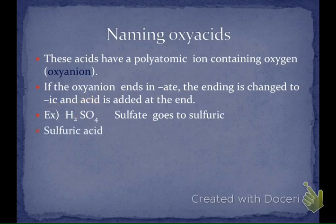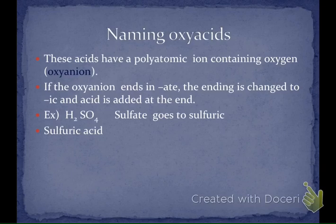As soon as you hear the word 'acid' in a name, you'll know if it's binary or an oxy acid. If we say hydrobromic acid or hydrochloric acid, you know it's binary because we said 'hydro.' If you just hear 'sulfuric' or 'chloric,' then you know it's got to be an oxy acid.